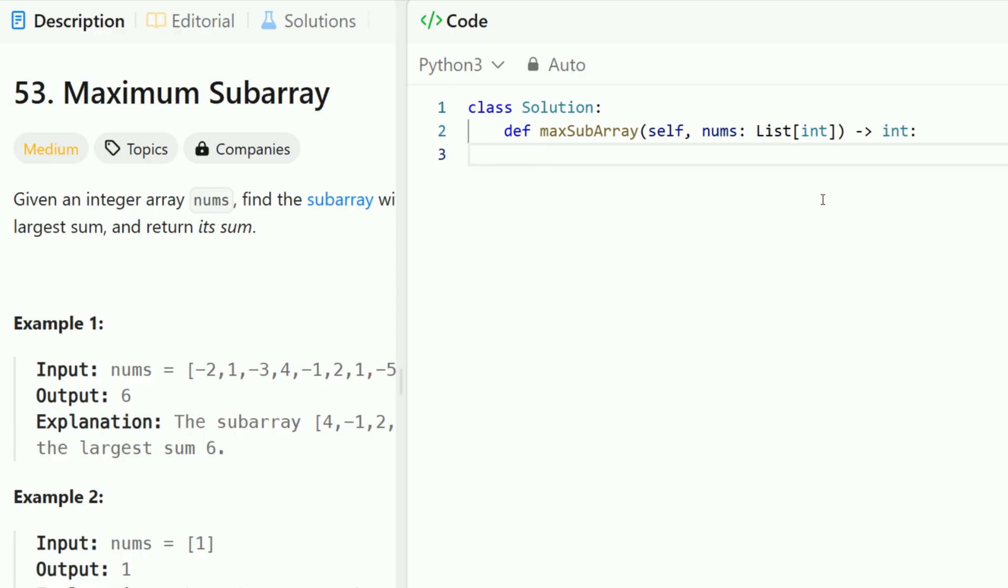All right, so let's code out the solution. First, we need a global max variable that's initialized to negative infinity. Then we need a current sum, which is going to be 0.